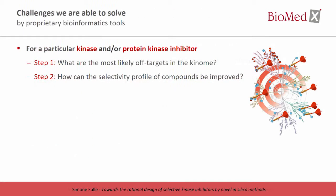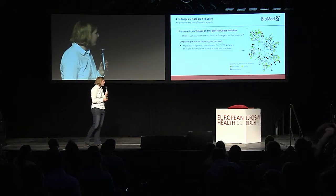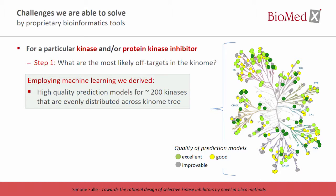This was also the motivation for my team to develop new computational methods which help design or improve the selectivity of compounds. What we are using together with our proprietary tools is this wealth of nowadays available structural information, profiling information, but also machine learning techniques like deep learning. Together, this allows us to address the following questions: what are the most likely off-targets in the kinome and how can the selectivity profile be improved? Using machine learning, we now have 200 really high-quality prediction models, color-coded in green and yellow on the kinome tree, evenly distributed — high quality, much better than what is published in the literature.